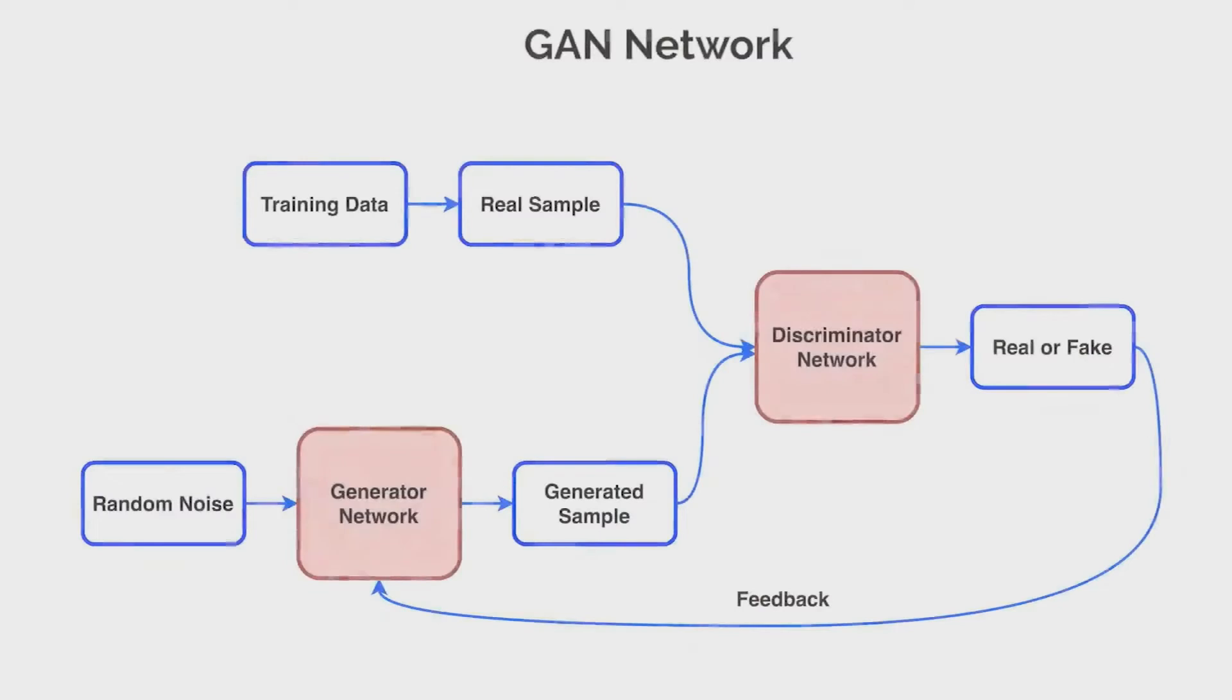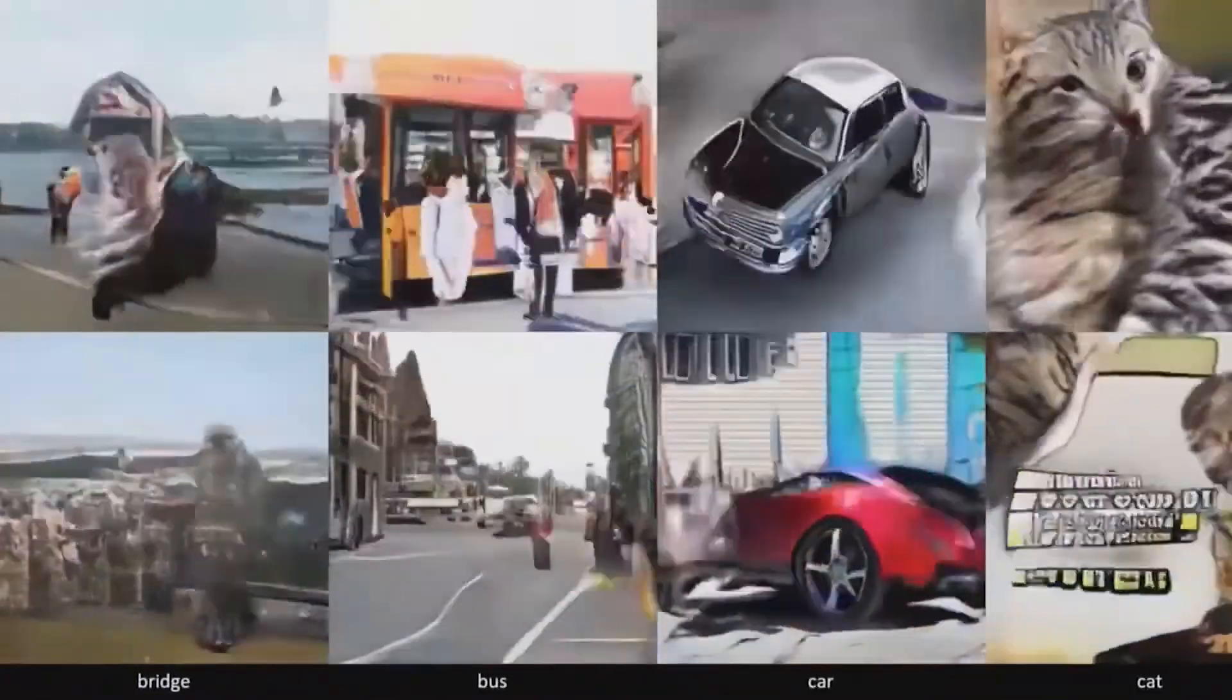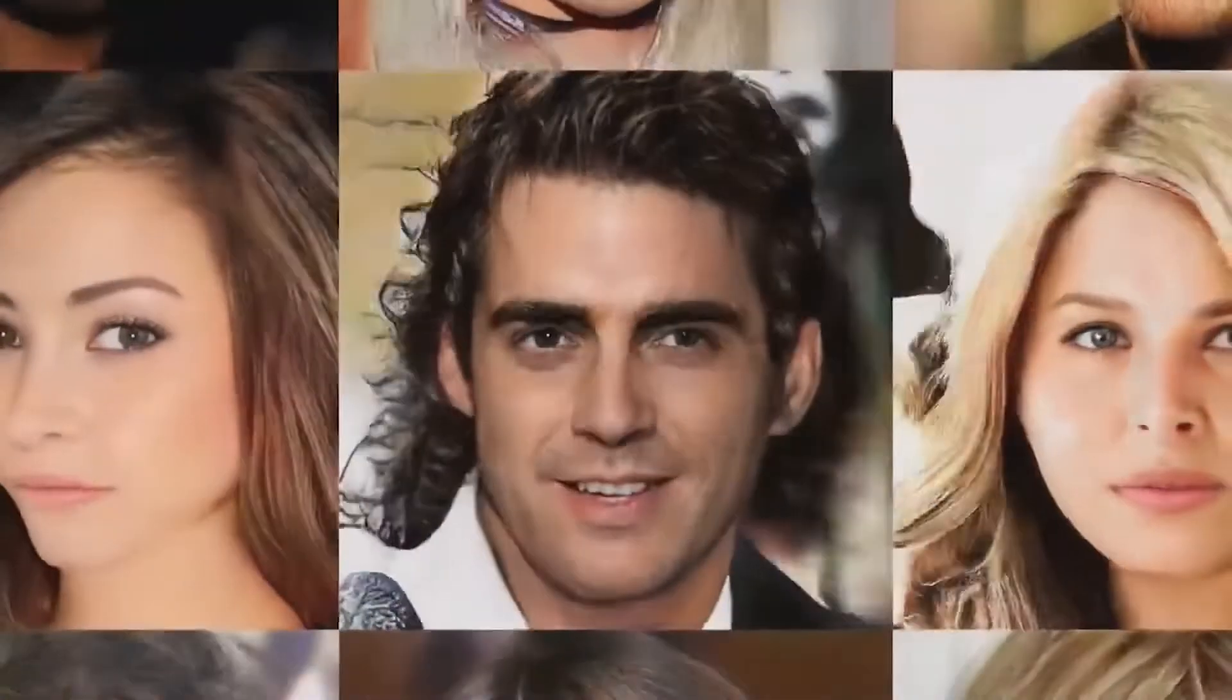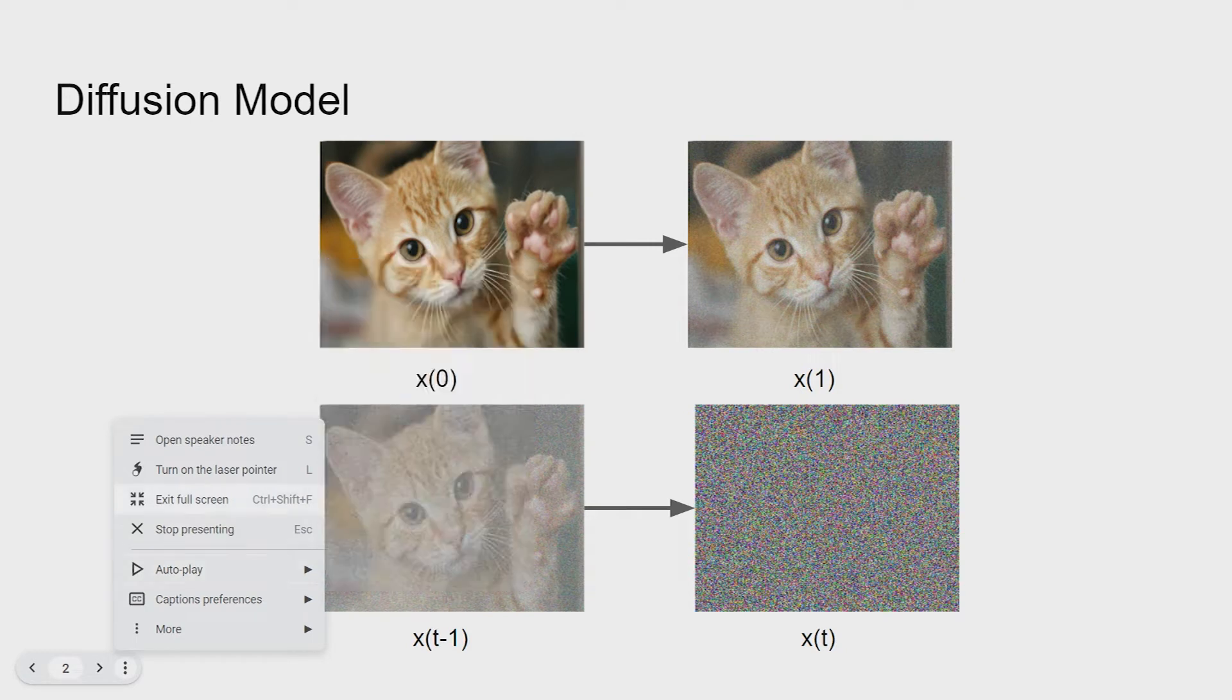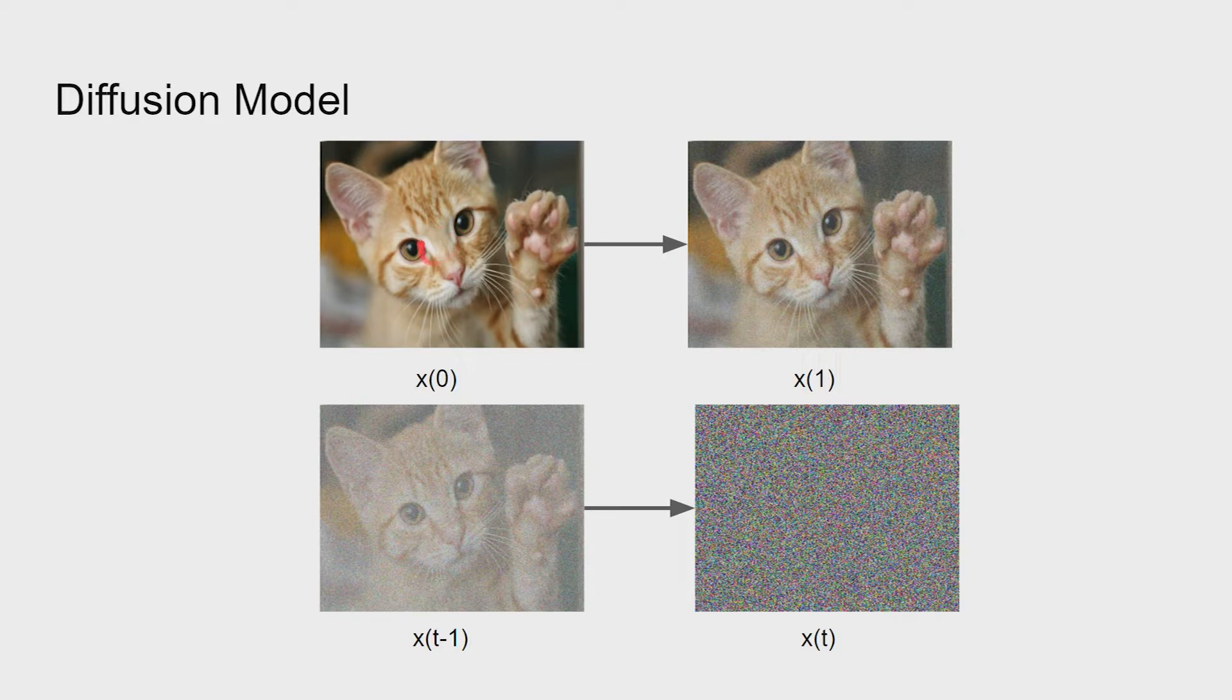In many generative applications like image synthesis, we can see GANs being used extensively, but GLIDE is based on diffusion models, which are known to generate superior image quality. When we train a diffusion model, we have an image dataset and for each image in the dataset, we go through n steps, adding a small amount of random noise every time.